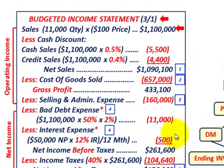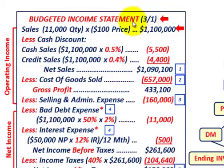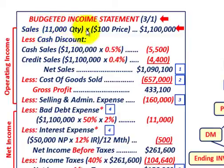Let's go through an example using inputs from the other budget videos in this series. We're looking at a budgeted income statement for one month — in this case, March — though you'd prepare one for each month of the year to get a full annual total. First, we'll look at the operating income section, starting with sales quantities times prices to get total sales dollars.